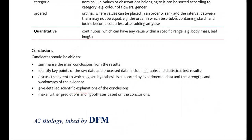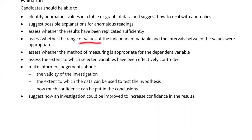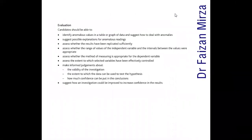Scientific explanation will be expected from you, and further predictions and hypotheses based on the conclusion can be asked. For evaluation, you must consider anomalous values — how to find them and how sufficiently replicated results can omit them — as well as the range of variables, the intervals between values, and the overall validity of the investigation. This is how the P5 paper comes and what's expected from you. Thank you so much.